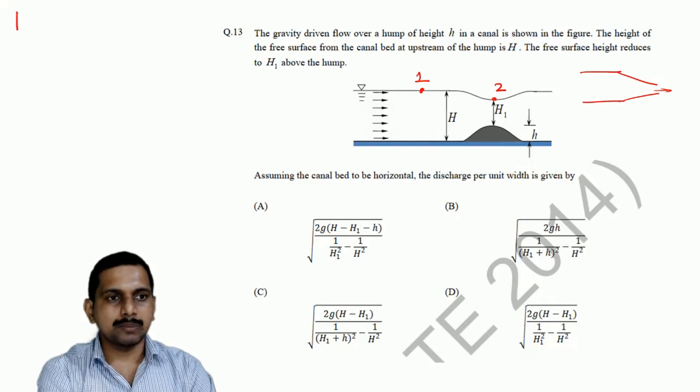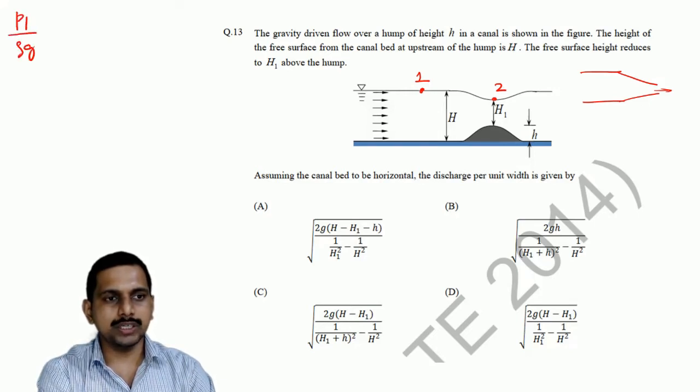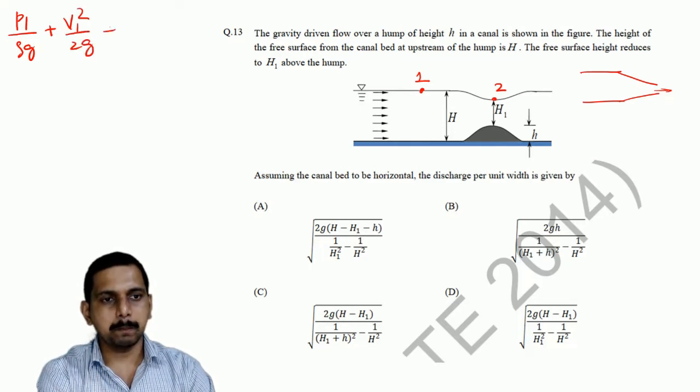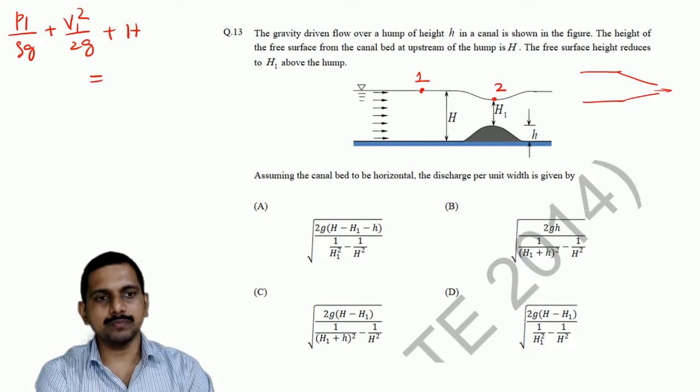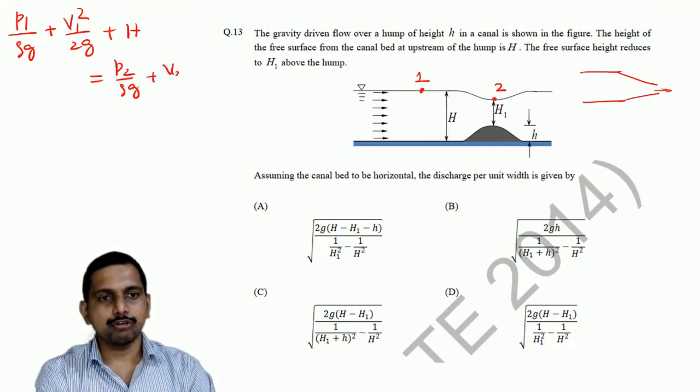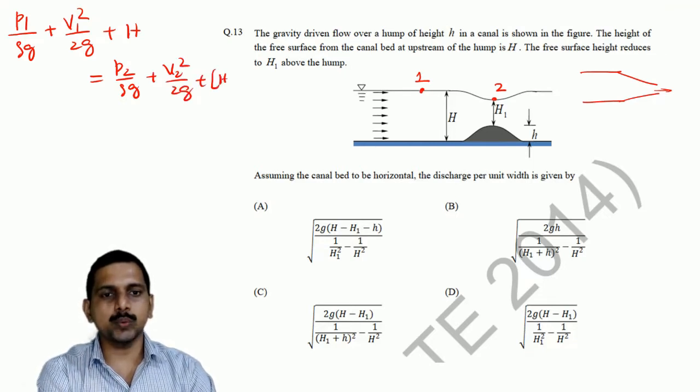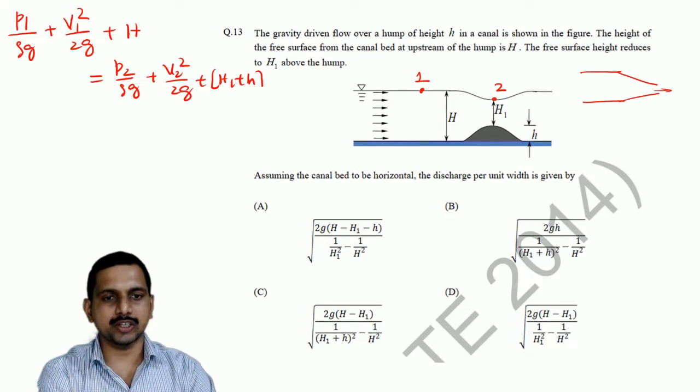Now, the Bernoulli's equation here is given by P1 by rho g plus V1 square by 2g plus Z is H, is equal to P2 by rho g plus V2 square by 2g plus H1 plus small h.